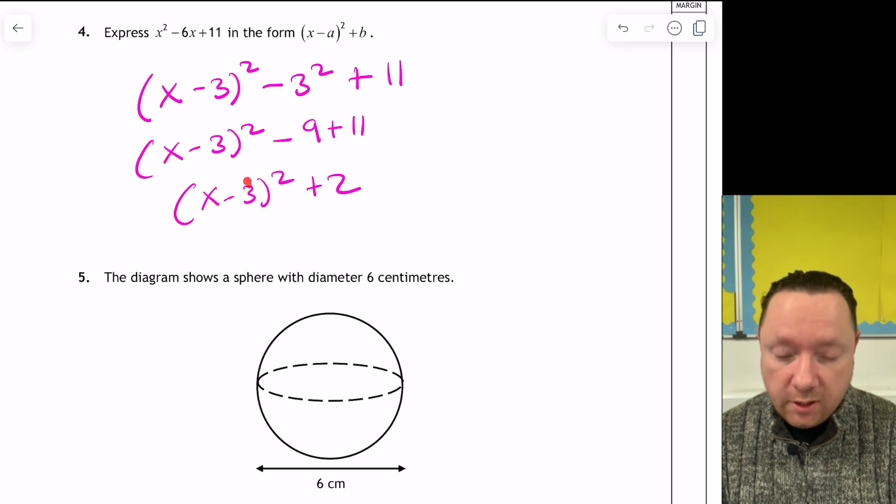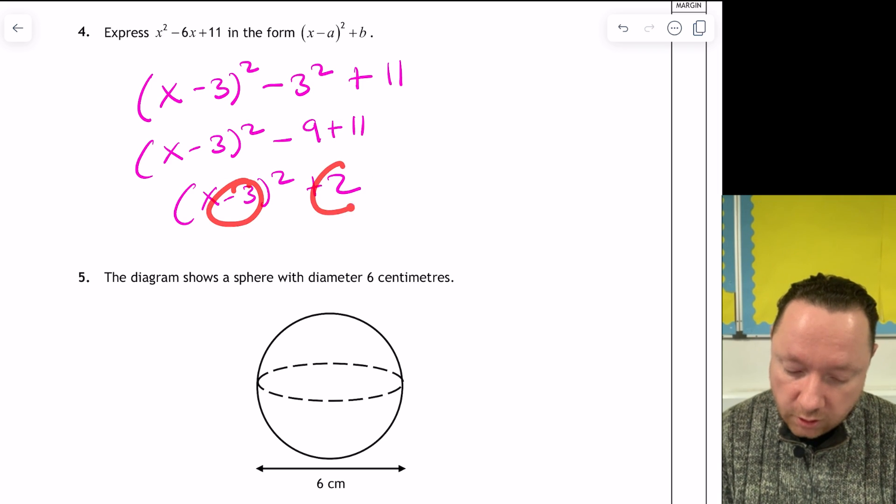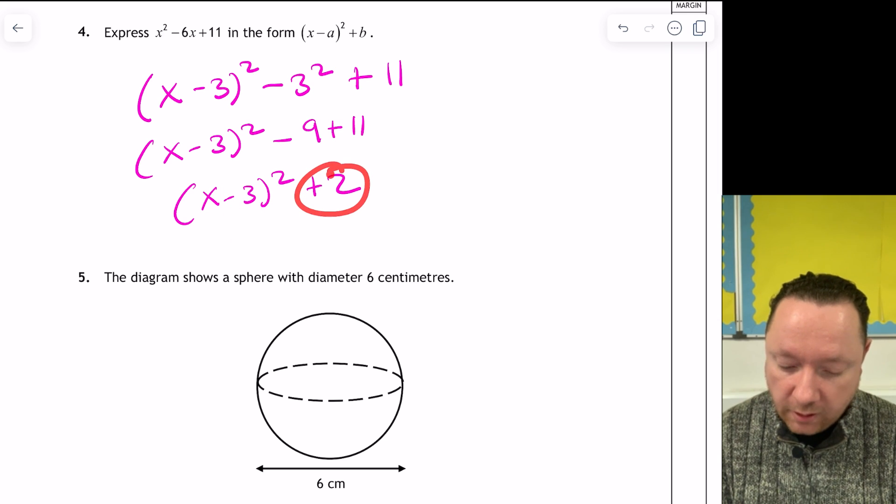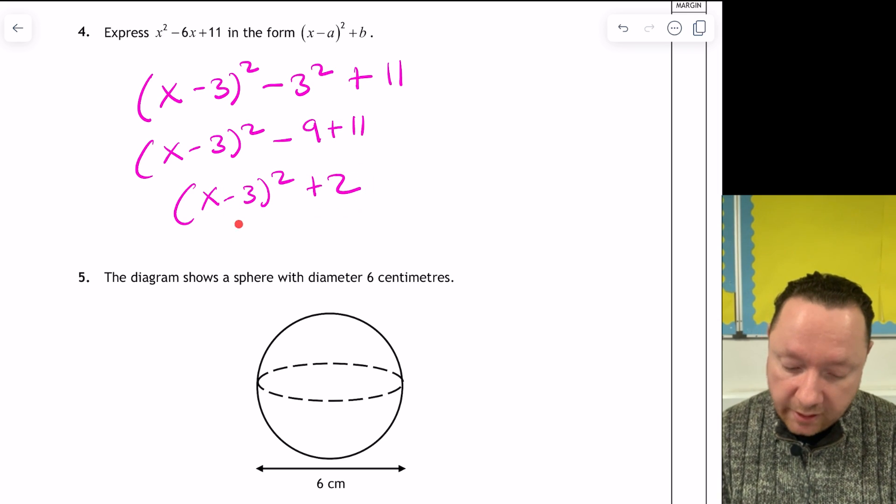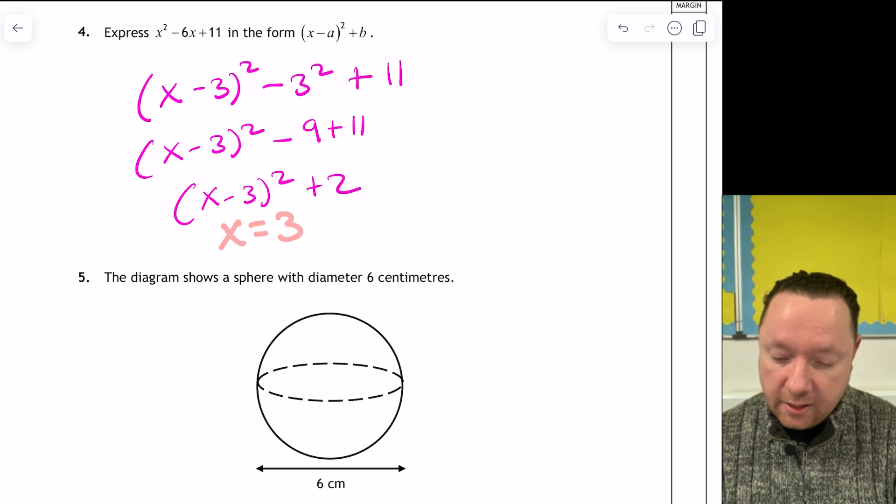Why do we do completing the square? If you get asked for the turning point now, then it's 3, 2. You change the sign on the first one because it makes 0, and then you keep the back one the same, and the axis of symmetry would be x equals 3.